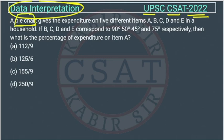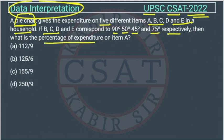A pie chart gives the expenditure on five different items A, B, C, D, and E in a household. If B, C, D, E correspond to 90 degrees, 50 degrees, 45 degrees, and 75 degrees respectively, then what is the percentage of expenditure on item A?